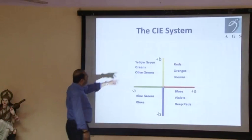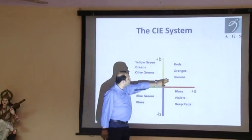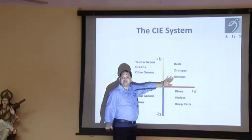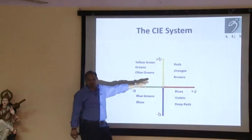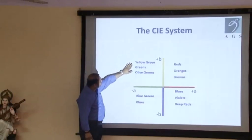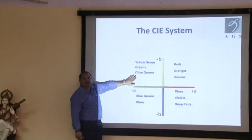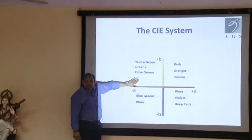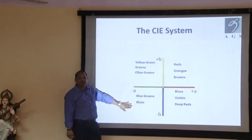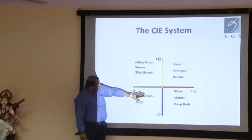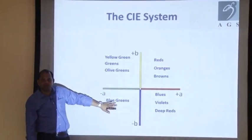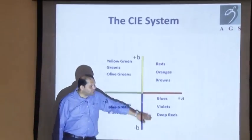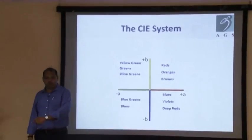All your reds, oranges and browns come in the first quadrant. All yellows, greens and olive greens come under the second quadrant. All blue-greens and blues come under the third quadrant. Blues, violets and deep reds come in the fourth quadrant.